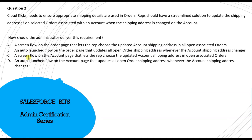Option C is a screen flow on the account page that lets reps choose the updated account shipping address in open associated orders. The update is happening on the account, and launching a screen flow on the account page letting the rep choose the updated shipping address for open orders — while possibly valid, there may be a more relevant answer. Let's check option D.